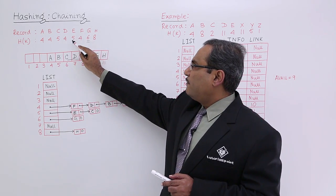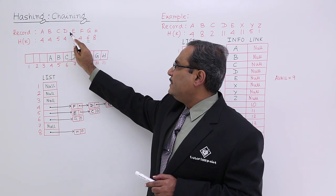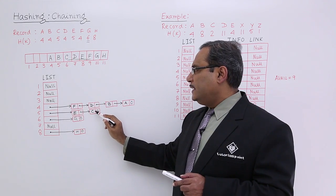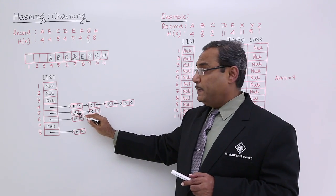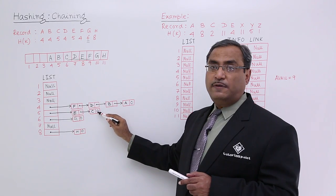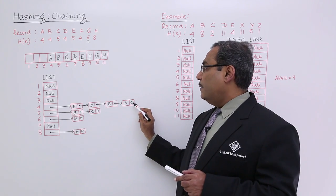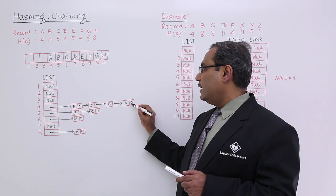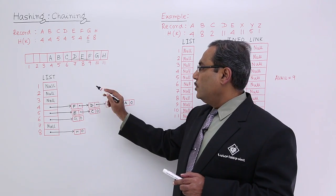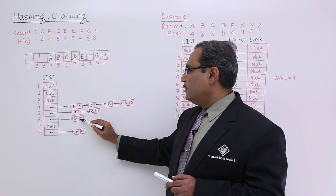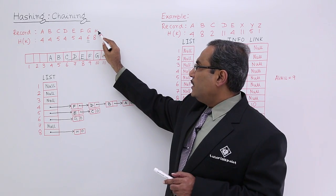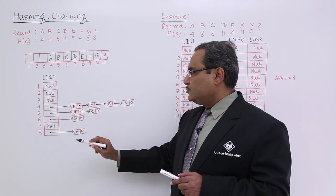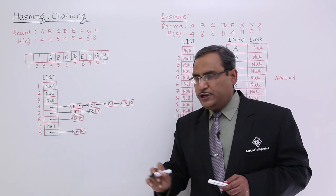Now for E, for 5, I am having C and then E. So C will be inserted, then E will be inserted. Inserted means prepended. So it will be having the linked list format like this. Here I am writing 0, actually 0 or null, I could have written null here also. Now for 6, I am having this G, and for 8th location, I am having this H. So I am getting this particular chaining.